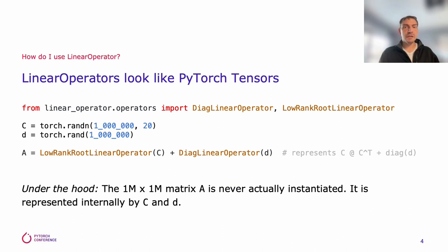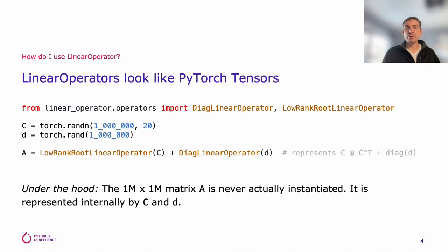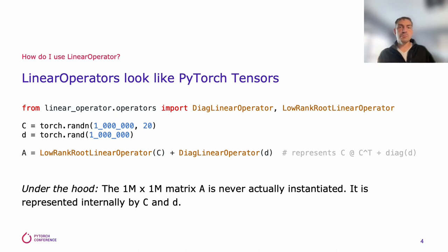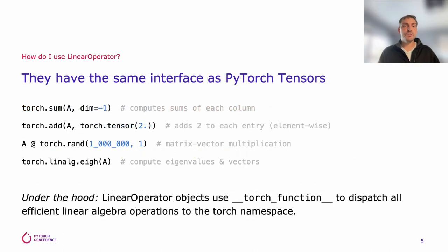So how do you use it? It's easy. Linear Operators look and largely behave like PyTorch tensors. In this example, we create a Linear Operator A of size a million by a million, that is the sum of a low-rank tensor and a diagonal tensor. Importantly, the 1 million by 1 million matrix is never actually instantiated. Yet we can do a bunch of interesting stuff with it — namely, we can use the standard Torch APIs on those linear operator objects.